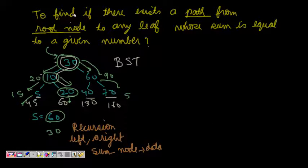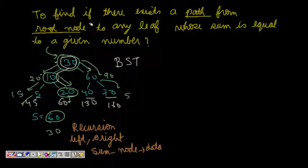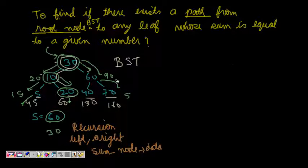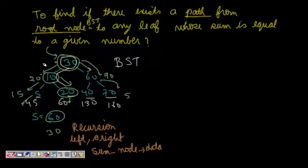Our question is to find if there exists a path from the root node of a binary search tree to any leaf of the binary search tree whose sum is equal to a given number. Let's take an example to understand it.